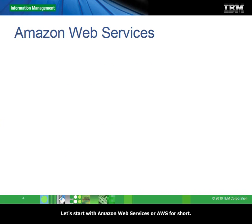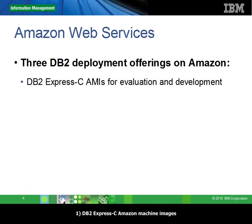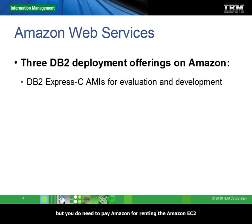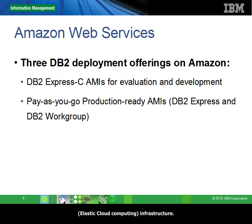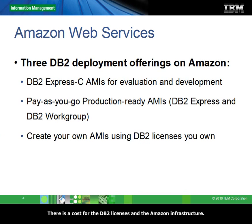Let's start with Amazon Web Services, or AWS for short. With AWS we have three DB2 deployment offerings. The first is DB2 Express-C Amazon Machine Images, or AMIs, for evaluation and development. You don't need to pay anything to IBM for using DB2 Express-C, but you do need to pay Amazon for renting the Amazon infrastructure. The second offering is Pay As You Go Production Ready AMIs, which allows you to use DB2 Express or DB2 Workgroup in a production setting on the cloud. There is a cost for the DB2 licenses and the Amazon infrastructure.